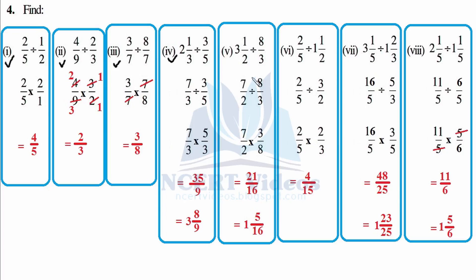Now 3 and 1 — that is 3 times 2 plus 1 is 7 over 2, divided by 8/3. So 7/2 as it is, multiplied by 3 over 8 — flip it — it becomes 21 over 16, so 1 and 5 over 16.